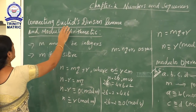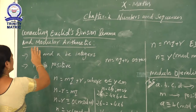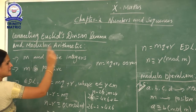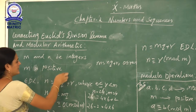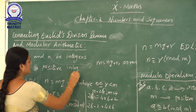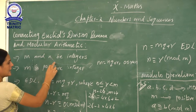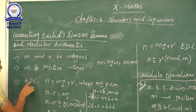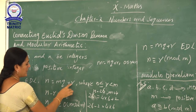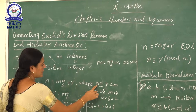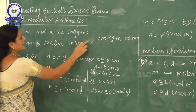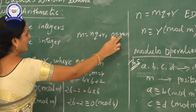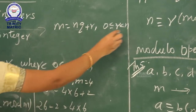Our next heading: connecting Euclid's Division Lemma and Modular Arithmetic. Let M and N be integers, where M is a positive integer. By Euclid's Division Lemma, N equals MQ plus R, where R is greater than or equal to 0 and less than M. Suppose M is positive — we apply Euclid's Division Lemma as M equals NQ plus R, where R is greater than or equal to 0 and less than N.